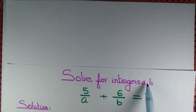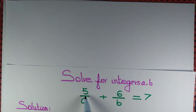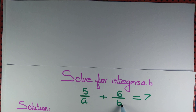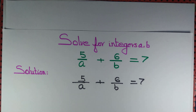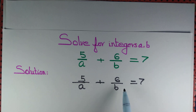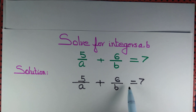Let us solve for integers a, b that satisfy the equation 5/a + 6/b = 7. We want to determine integers a and b that satisfy this equation.